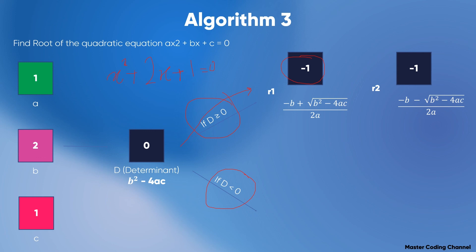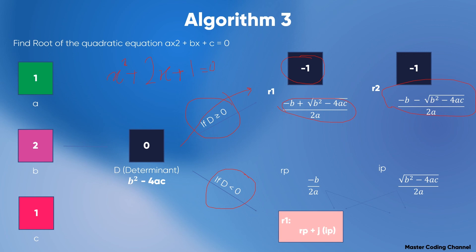If the determinant d is less than zero, I calculate the real part as −b / 2a and the imaginary part as √(b² − 4ac) / 2a, then plug them into the formula: r1 = real part + j × imaginary part, and r2 = real part − j × imaginary part. This is how we use the algorithm — these are examples of algorithms.